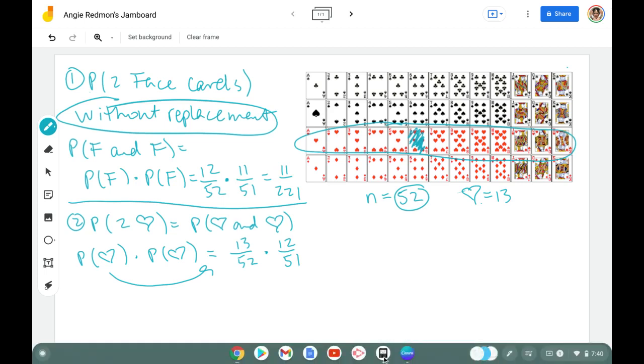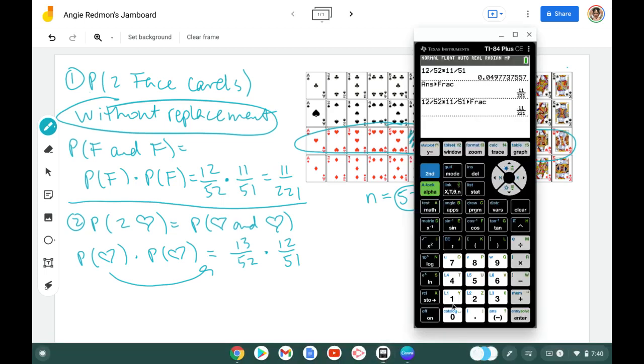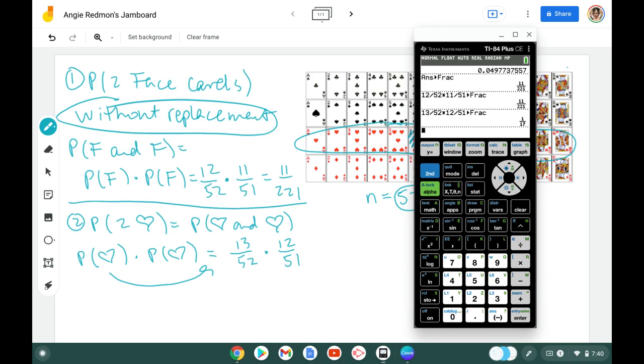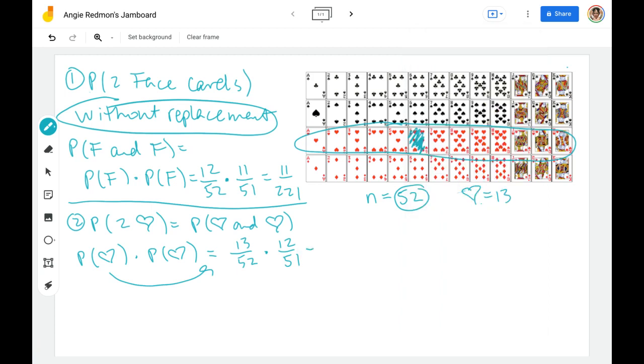I can go ahead and put this right into my calculator. And I'm going to do 13 out of 52 times 12. Again, there's that nice pattern, 12 out of 51. And I know I want a reduced fraction. So I'm just going to do math, convert to fraction. And I get 1 out of 17. So this is going to equal 1 out of 17.